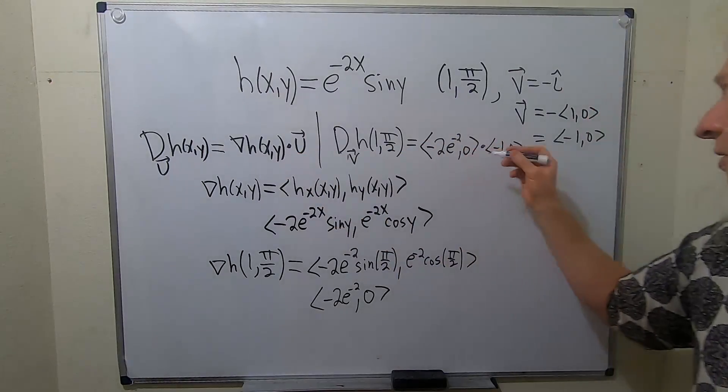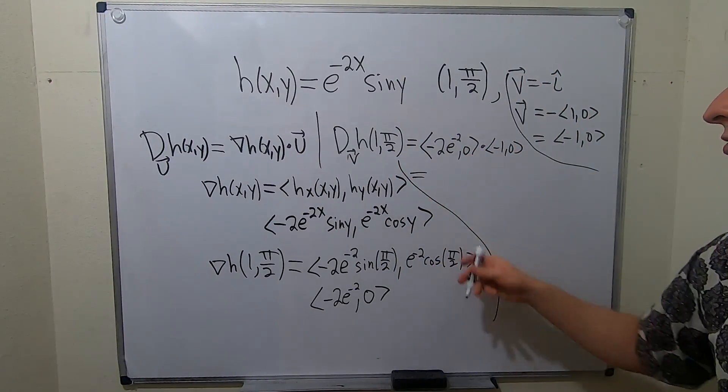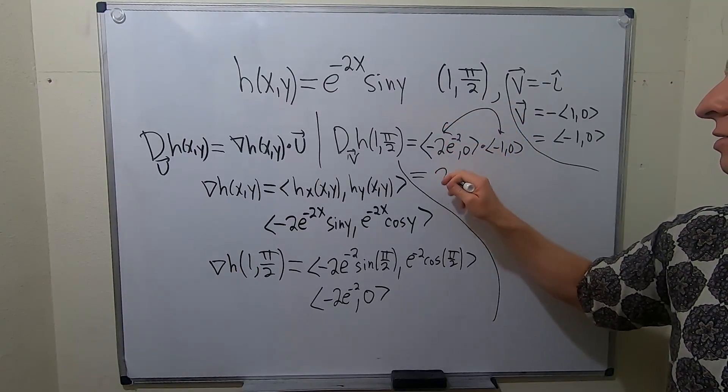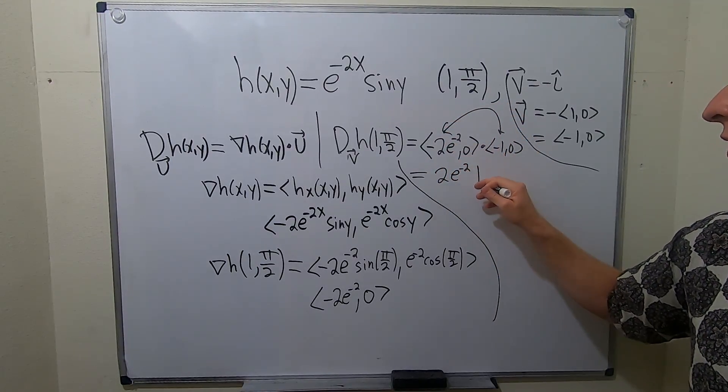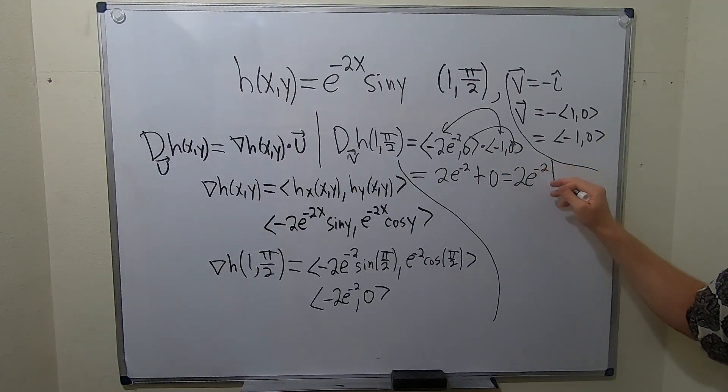All right, that's our unit vector u. We called it v in this problem. And when you compute dot products, what you do is you multiply this times this. So it's this times this. That's going to be 2 e to the negative 2, plus, and then this times this. So 0. So we end up with 2 e to the negative 2. And that, my friends, is the final answer.